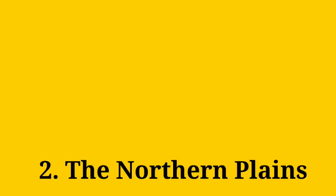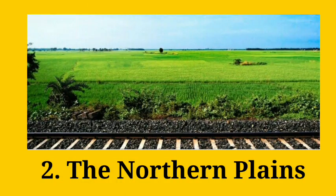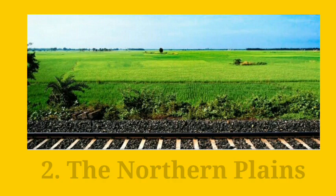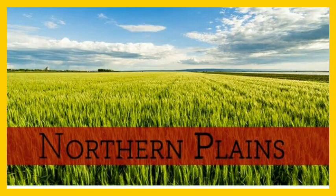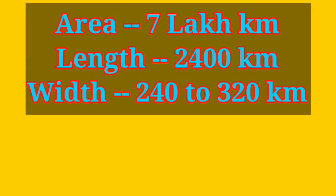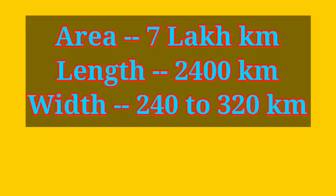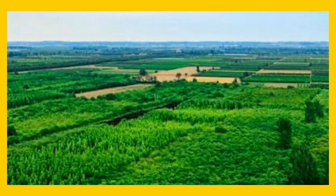The second physiographic feature is the Northern Plain. It has been formed by the interplay of the three major river systems — the Indus, the Ganga and the Brahmaputra — along with their tributaries. This plain is formed of alluvial soil, deposited in a vast basin lying at the foothills of the Himalayas over millions of years. It spreads over an area of 7 lakh square kilometers, about 2400 km long and 240 to 320 km broad, and is a densely populated physiographic division.